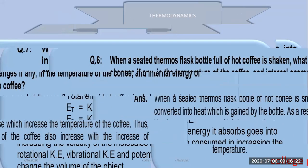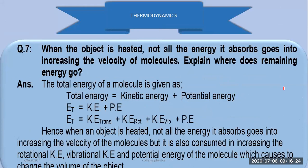Welcome dear students. We are discussing some important questions in thermodynamics. The question is: when an object is heated, not all the energy it absorbs goes into increasing the velocity of the molecule. Explain where does the remaining amount of energy go. So let's look at what the total energy of a molecule is.